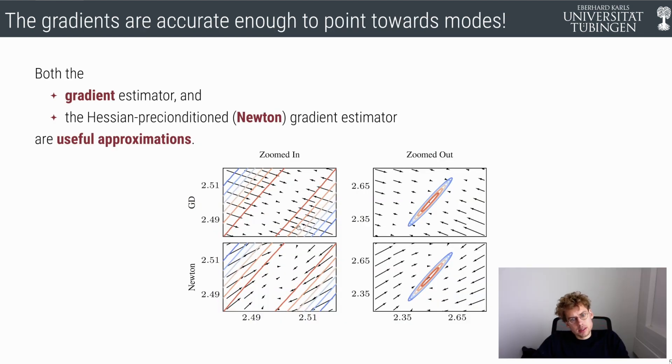Here you see them, and you see the gradient and the Newton step directions with the Hessian. You see them on an example system, Lotka-Volterra. We can see that these gradients and Newton steps indeed point towards the mode of the distribution. Even though there are approximations, they appear to be useful.